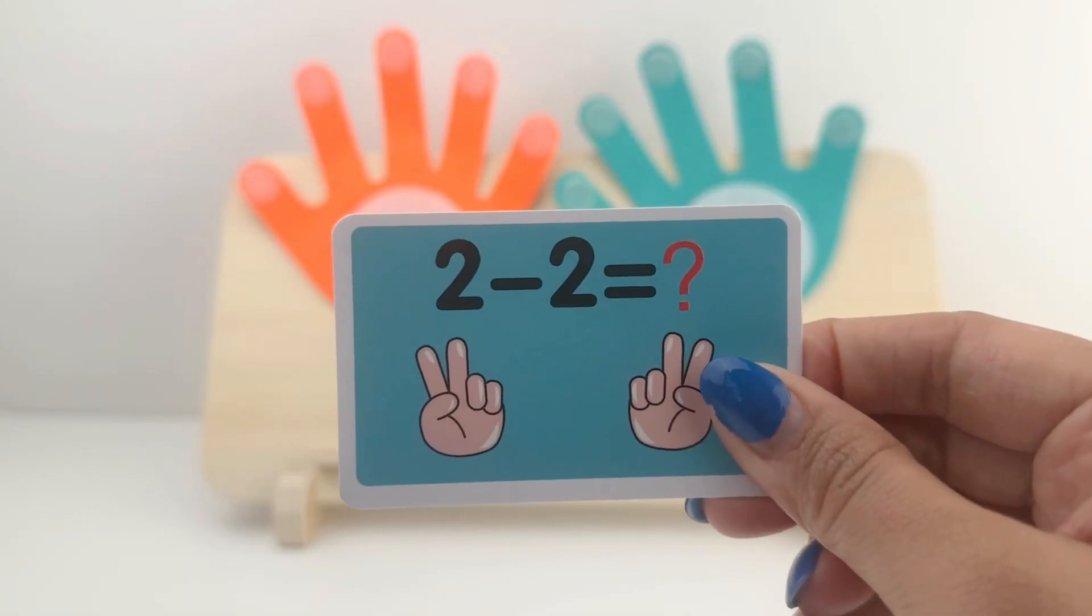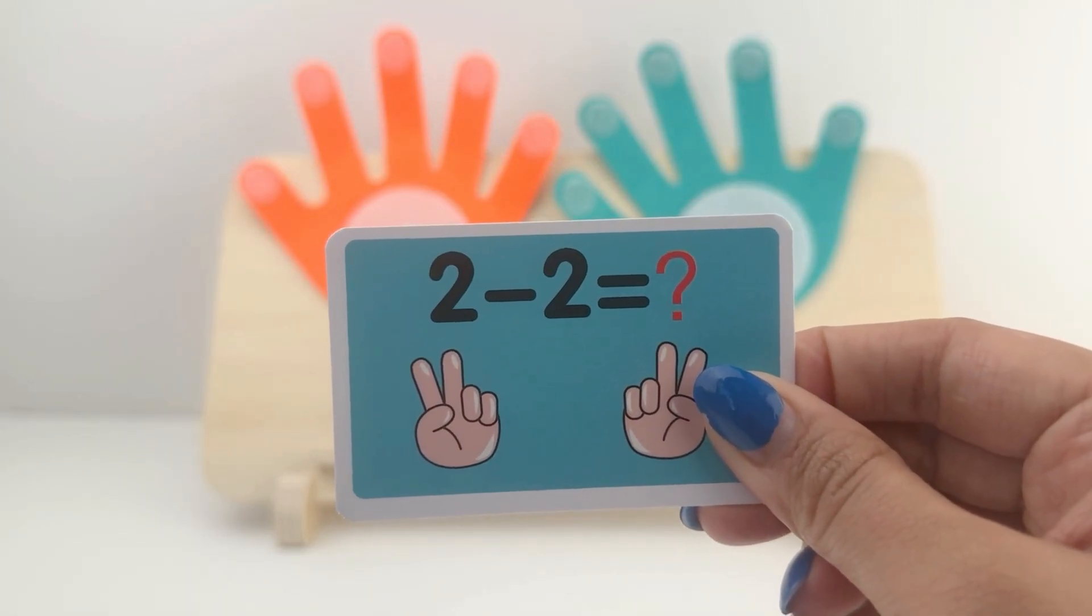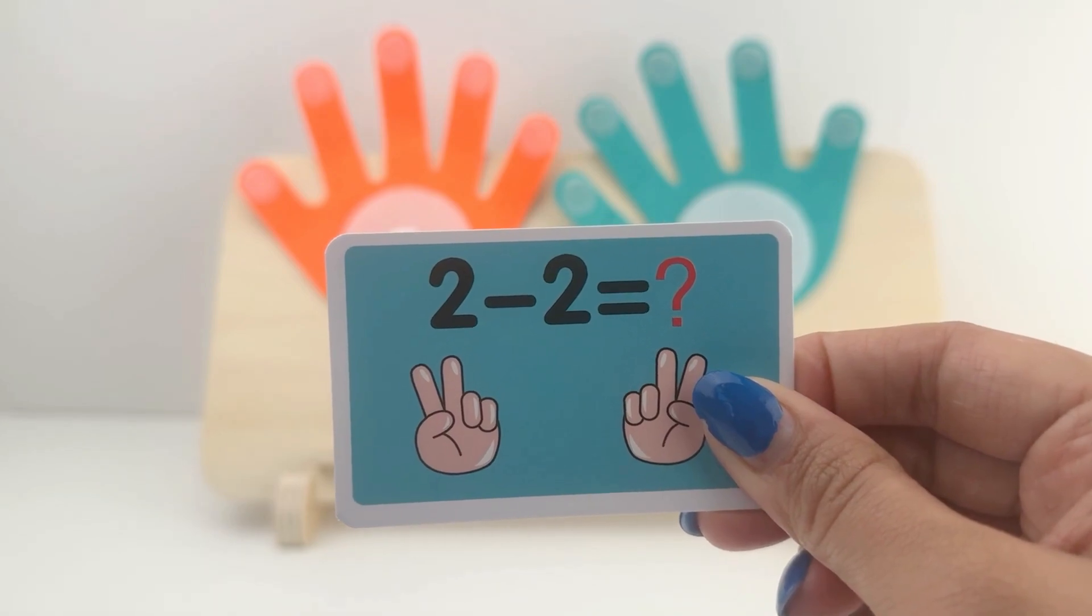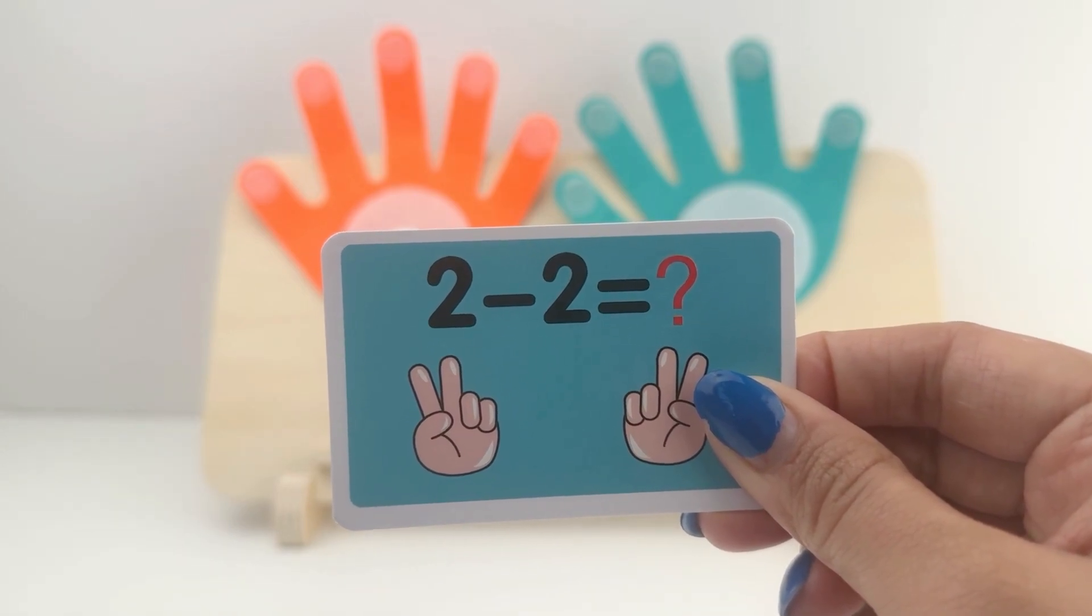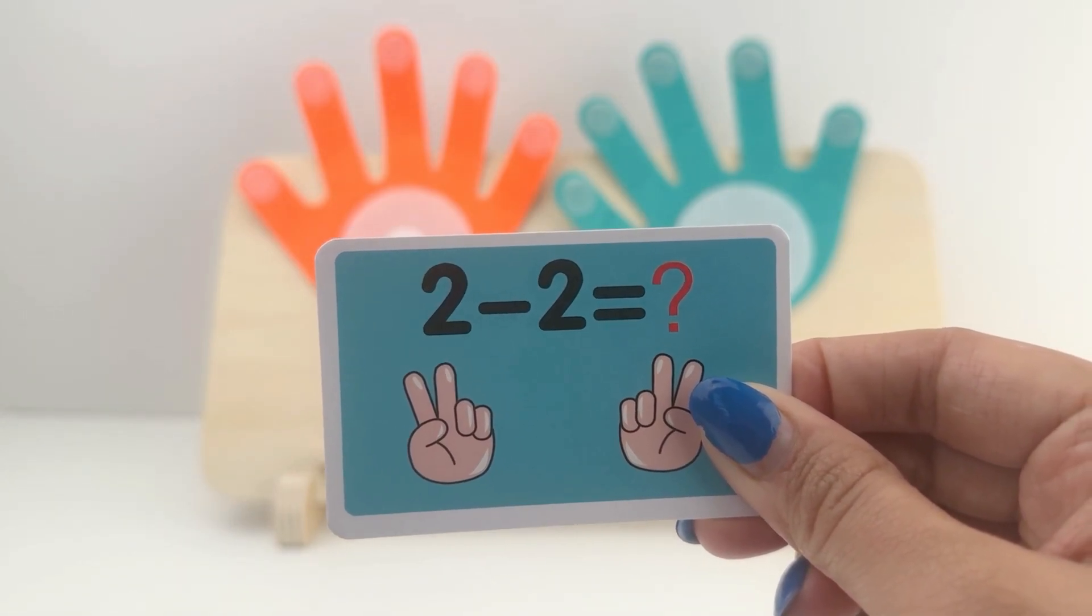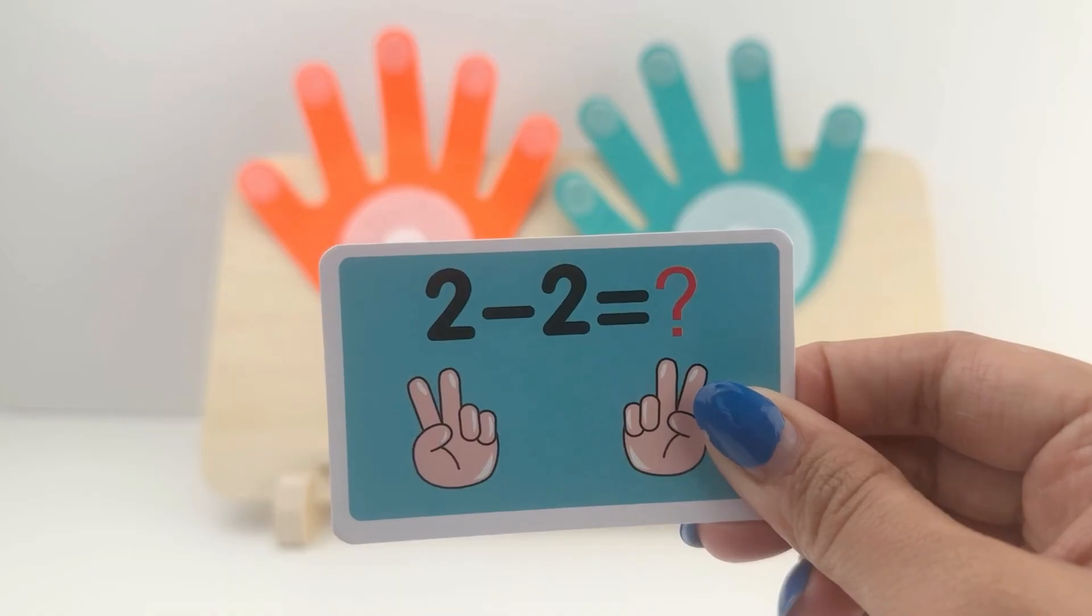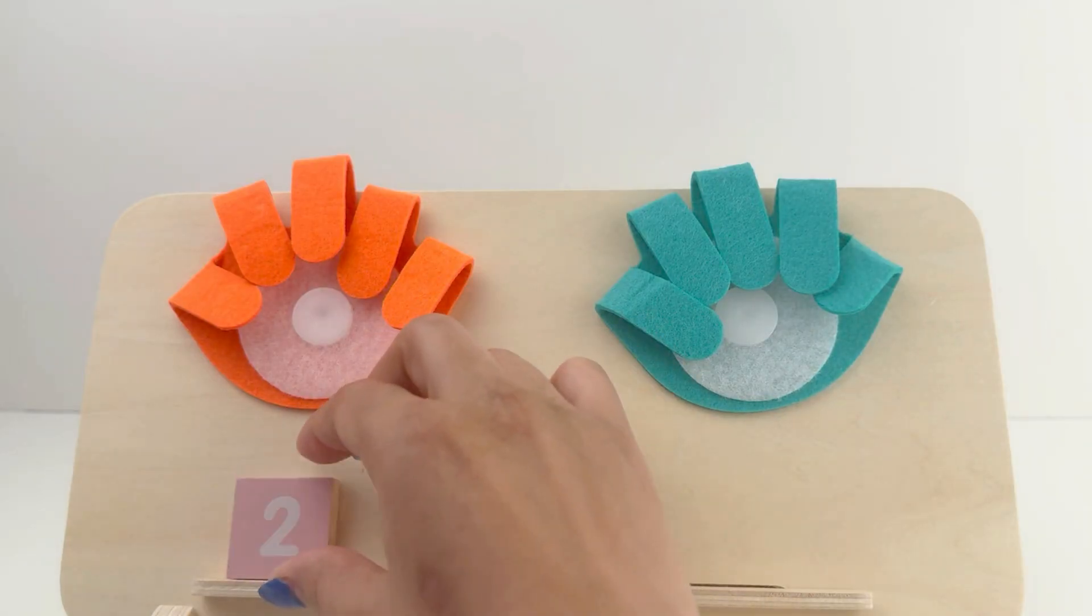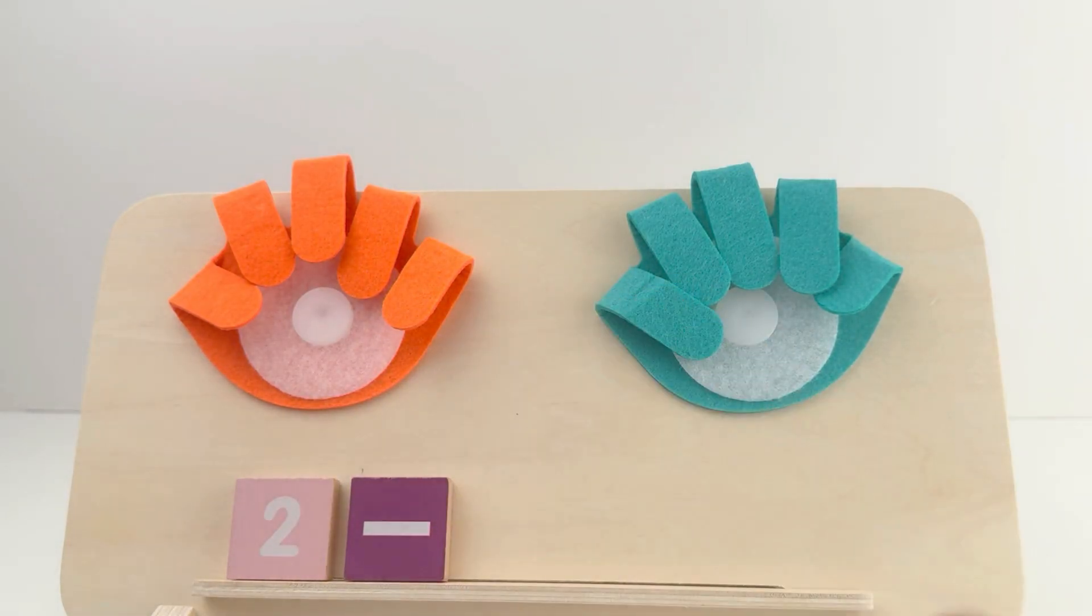Let's see what our final card says. It says 2 minus 2 equals. Come friends, let's do it together. I am placing my blocks on the board. 2 minus 2 equals.